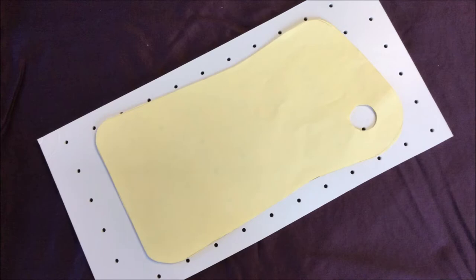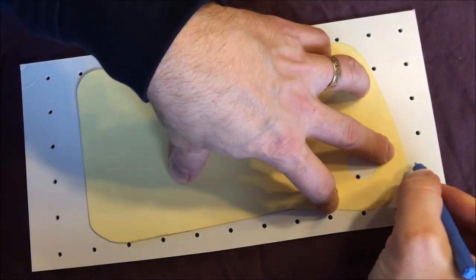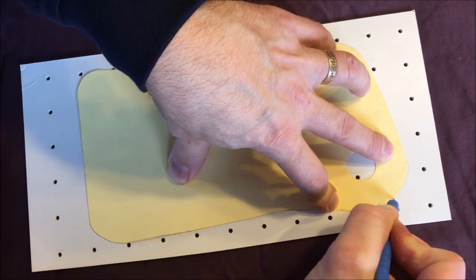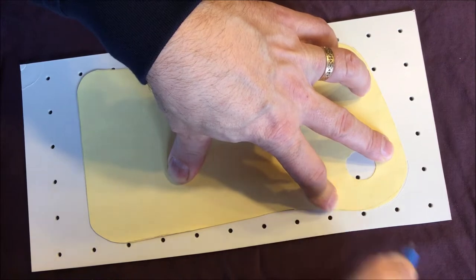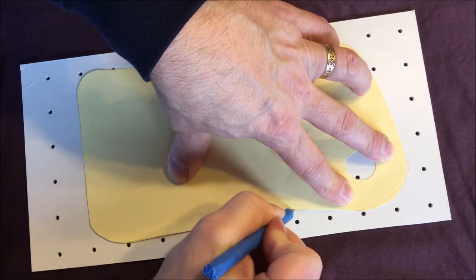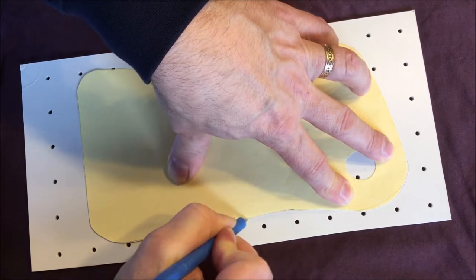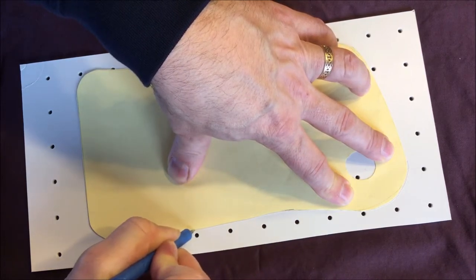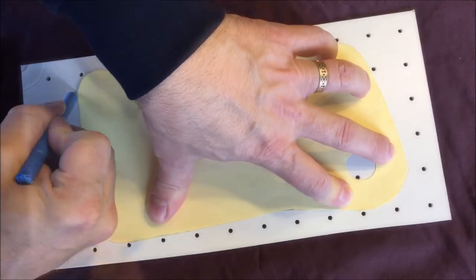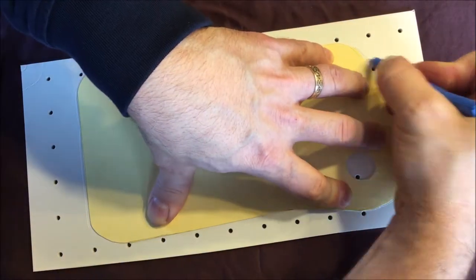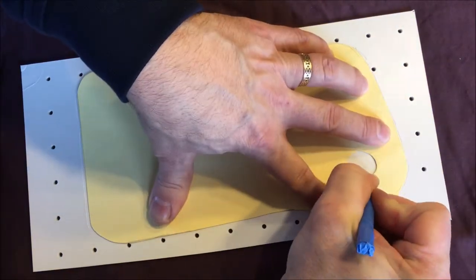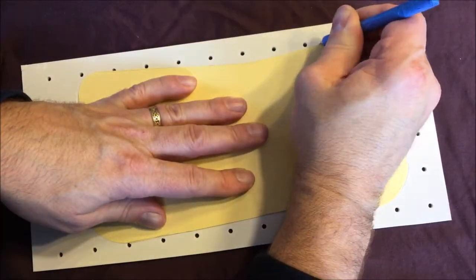Place your pattern on the thermoplastic, and I like to trace it with a scratch awl to just trace or scratch the pattern onto the thermoplastic. That way you don't end up with pin marks or wax pencil marks that you have to deal with later. Notice also that I place the pattern on the thermoplastic in a way that minimizes the number of holes right on the edge that I'm going to have to deal with later.